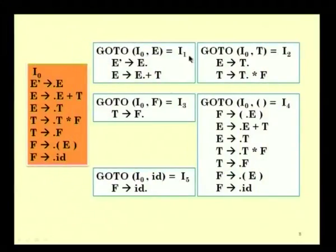From i0 we compute the resulting states: i1 from i0 for E, i2 from i0 for T, i3 for F, i4 for opening bracket, and i5 for id. The remaining states i6, i7, i8, i9, i10, and i11 are computed similarly, giving states from 0 to 11 — a total of 12 states — as the outcome of computing the LR(0) items for the expression grammar.